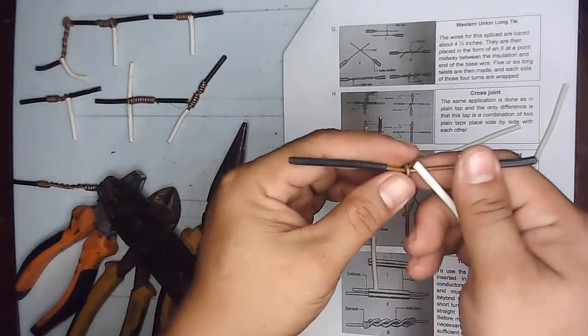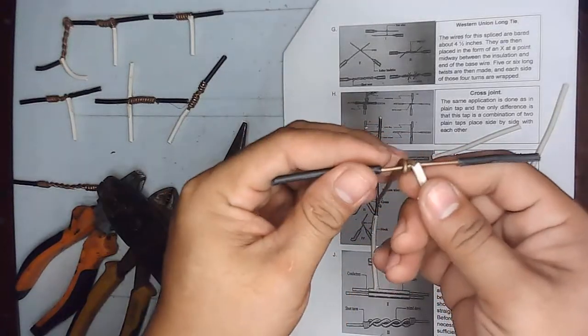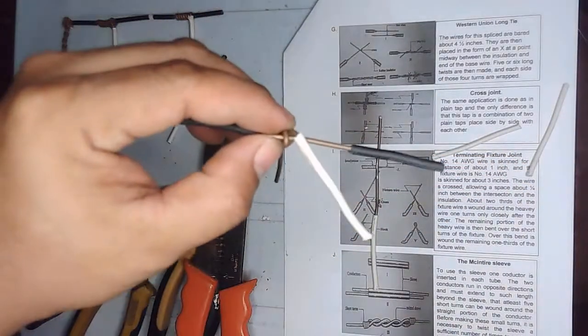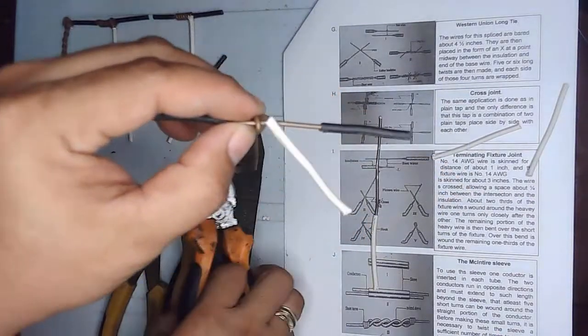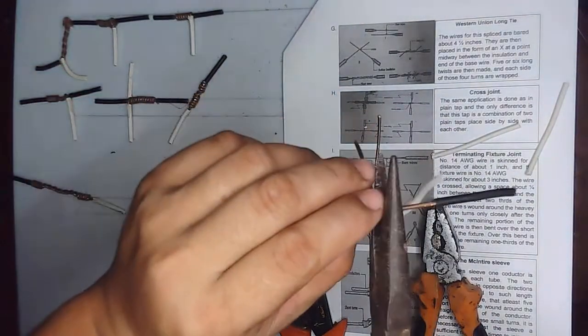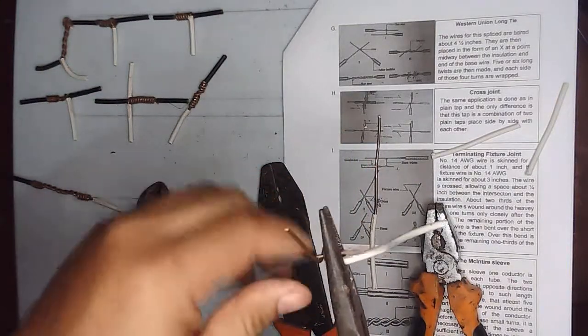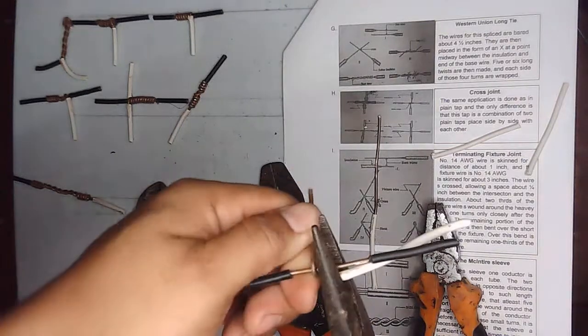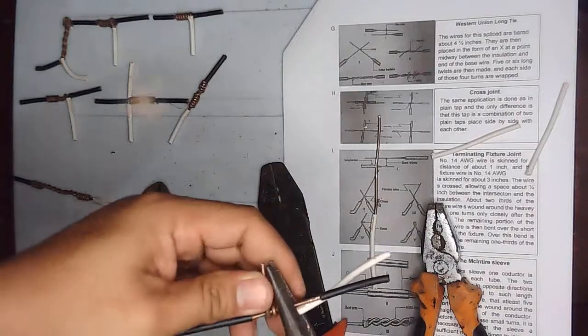If it's curved, what you're going to do is straighten it again so that we can hold it tightly. We'll use the long nose pliers. Make sure that there are no gaps between the turns.